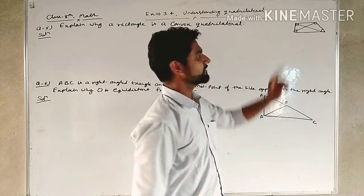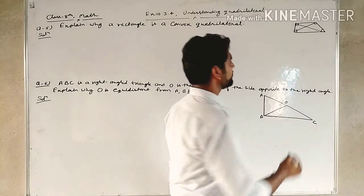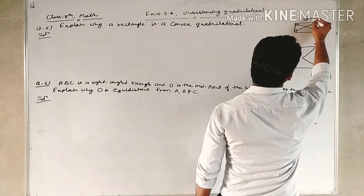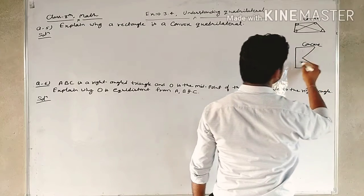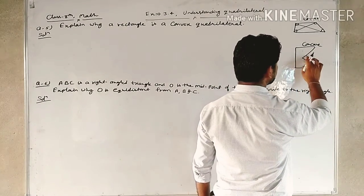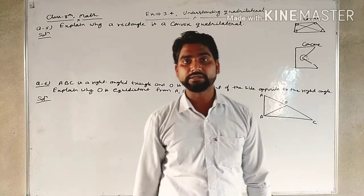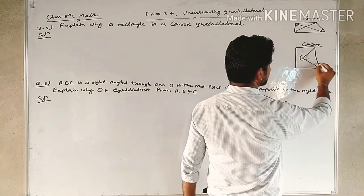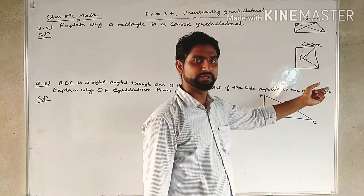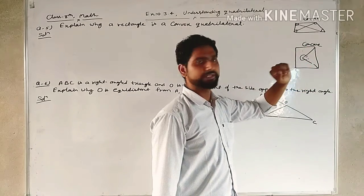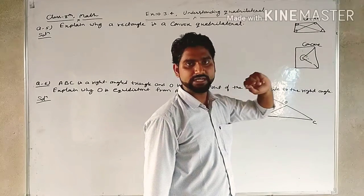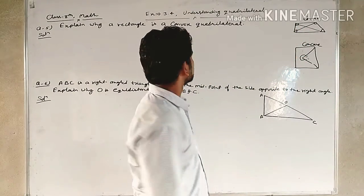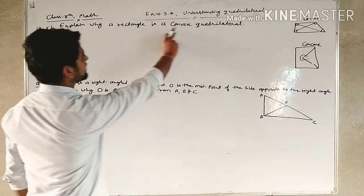A convex quadrilateral has all angles less than 180 degrees, and this is different from a concave quadrilateral. In a concave quadrilateral, one angle is greater than 180 degrees — and if you draw the diagonal, it goes outside to the exterior part. So the difference between convex and concave is now understood. Now, question number 5: explain why a rectangle is a convex quadrilateral.